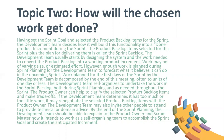Work planned for the first days of the sprint by the development team is decomposed by the end of this meeting, often to units of one day or less. The development team self-organizes to understand the work in the sprint backlog both during sprint planning and as needed throughout the sprint. The product owner can help to clarify the selected product backlog items and make trade-offs. If the development team determines it has too much or too little work, it may renegotiate the selected product backlog items with the product owner. The development team may also invite other people to attend to provide technical or domain advice. By the end of sprint planning, the development team should be able to explain to the product owner and Scrum Master how it intends to work as a self-organizing team to accomplish the sprint goal and create the anticipated increment.